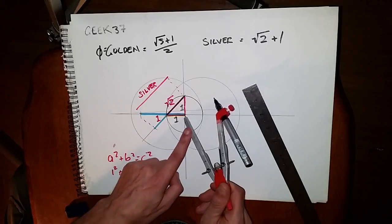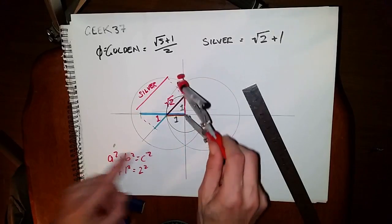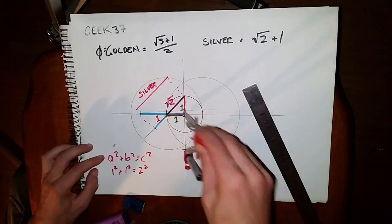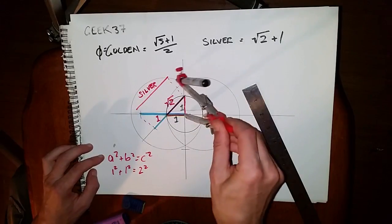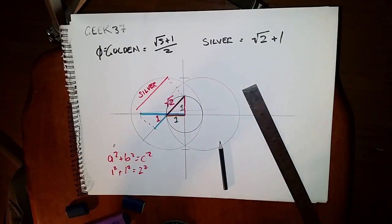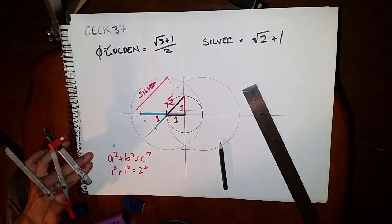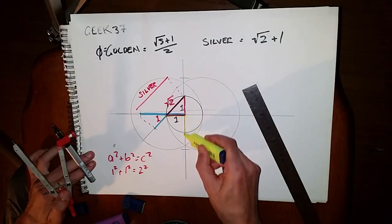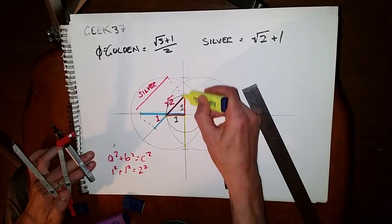And again on the centre point there, and now you could draw a circle all the way around, but I'll just mark off these two points, because now this portion is two, also as is this.